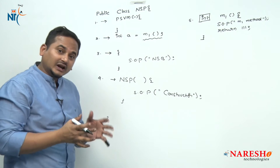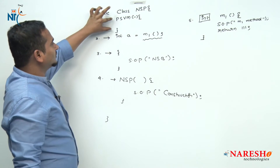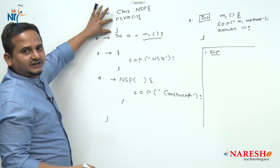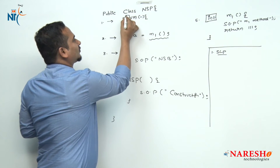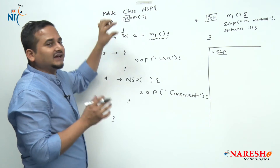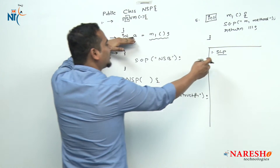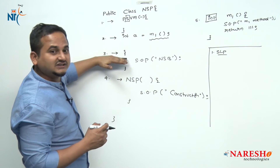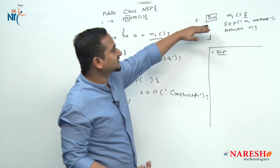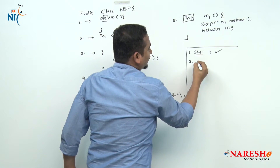Whenever we load the .class file from secondary memory to primary memory, JVM always concentrates on static data first. The static loading phase starts. JVM checks whether each element is static data or not. The main method — public static void main — is static data, so JVM reads its heading and places it into memory. The non-static variable, non-static block, constructor, and non-static method are all skipped during the static loading phase. Once all statements are scanned, the static loading phase is successfully completed.